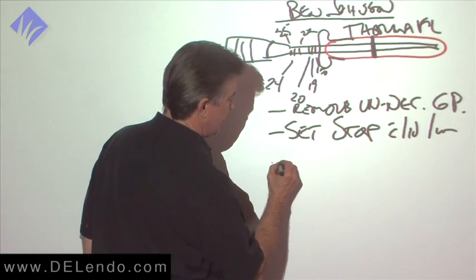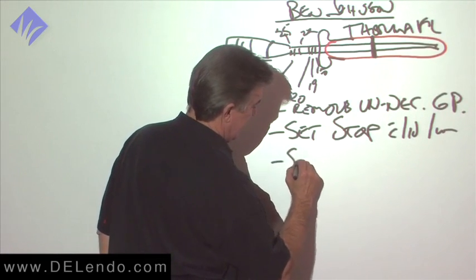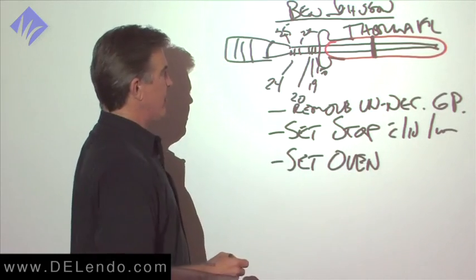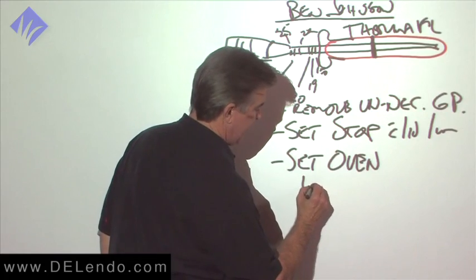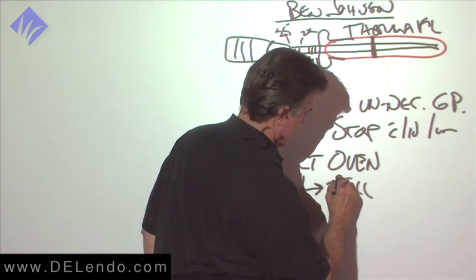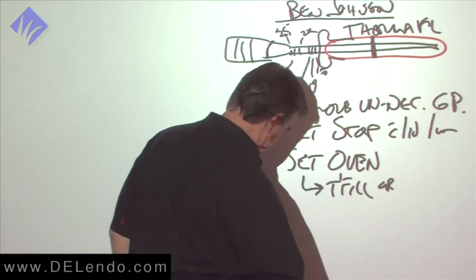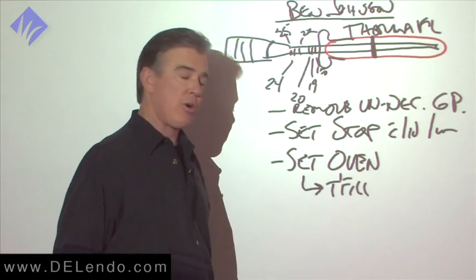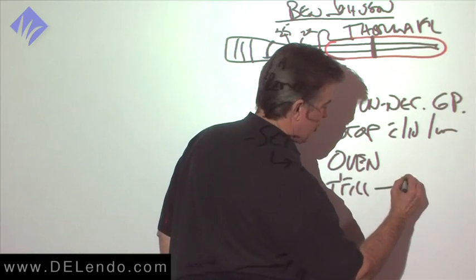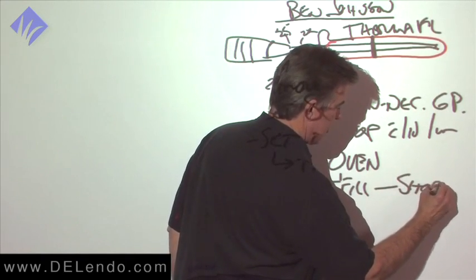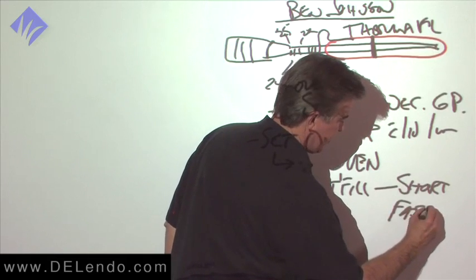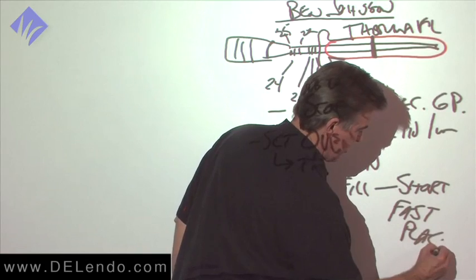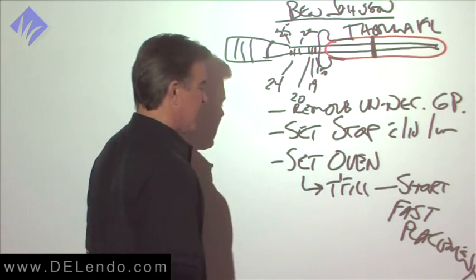And then we're going to set the oven cycle. If you're using a Thermafil or anything with that kind of a taper, that would be gutta core, that would be soft core, all those others, then you're going to do short cycle and fast introduction, fast placement.